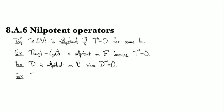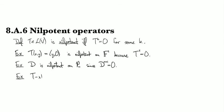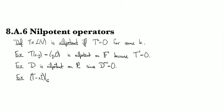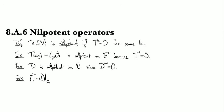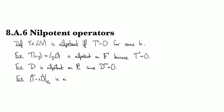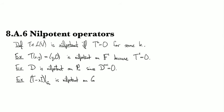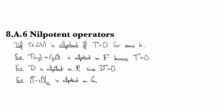And then the one that we've been looking at in this chapter is if we take T minus lambda I and we restrict it to the generalized lambda eigenspace, then this is nilpotent basically by the definition of G lambda.